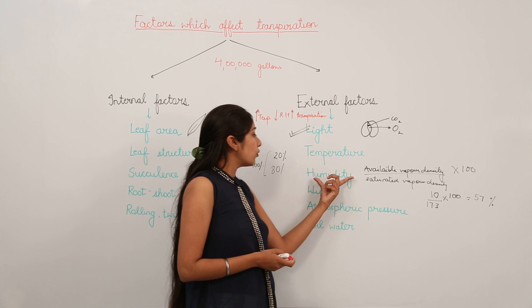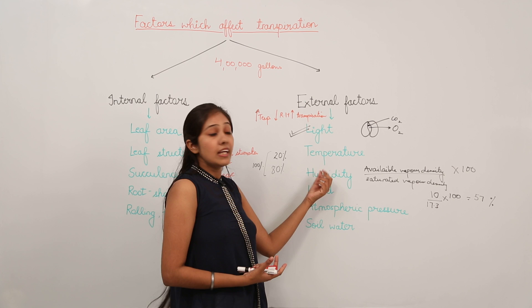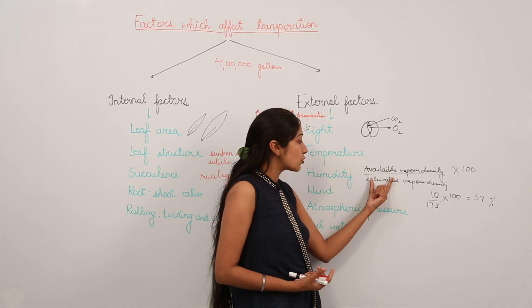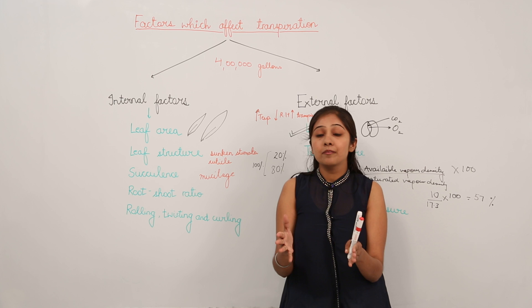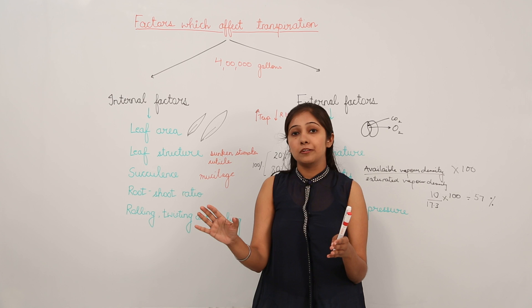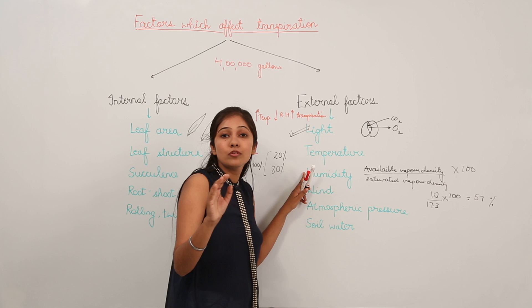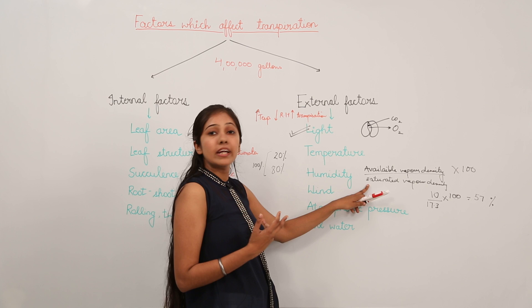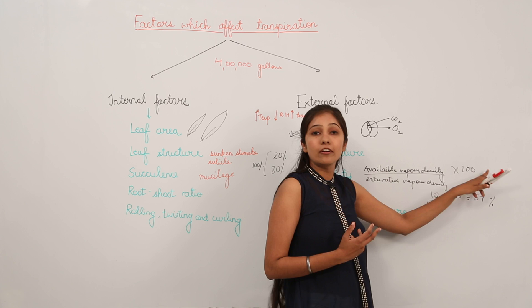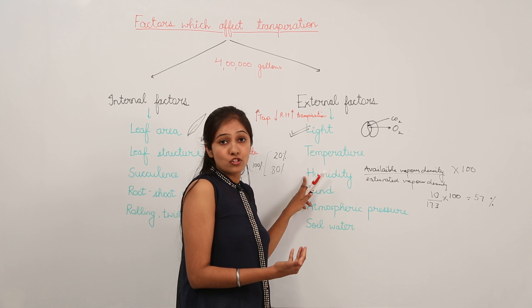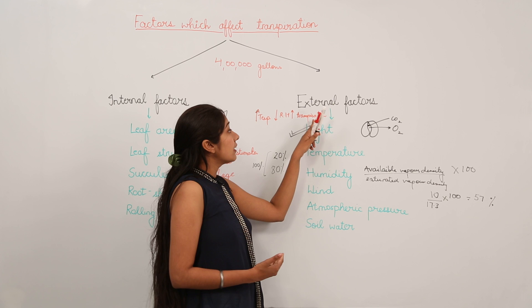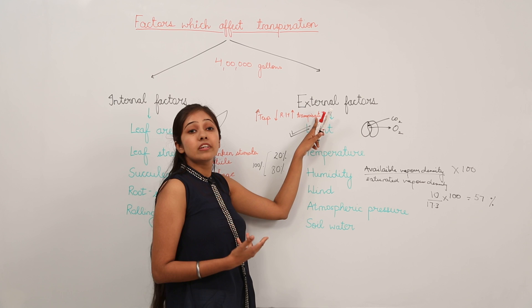Humidity is the amount of moisture present in the air. Relative humidity is defined as available vapor density upon saturated vapor density, representing the amount of vapor in the air relative to what is needed to saturate it, calculated as: RH = (available vapor density / saturated vapor density) × 100, expressed as a percentage. This has an inverse relationship with transpiration: more relative humidity means lesser rate of transpiration; less relative humidity means more rate of transpiration.